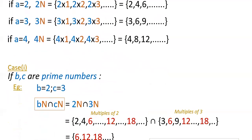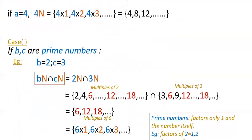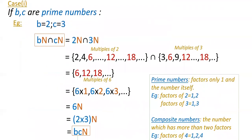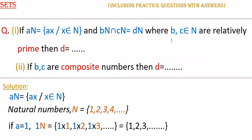In the first case, if B and C are prime numbers — prime numbers are numbers whose factors are only 1 and the number itself, such as 2, 3, 5, 7, 11, 13, 17. For example, take B=2 and C=3, which are prime numbers. So we compute Bn ∩ Cn, which is given to equal Dn.